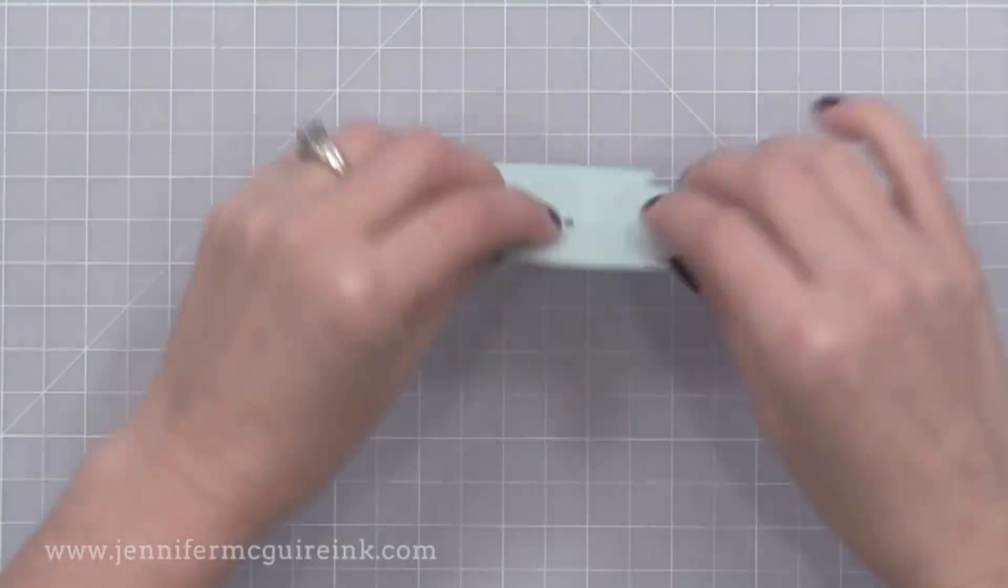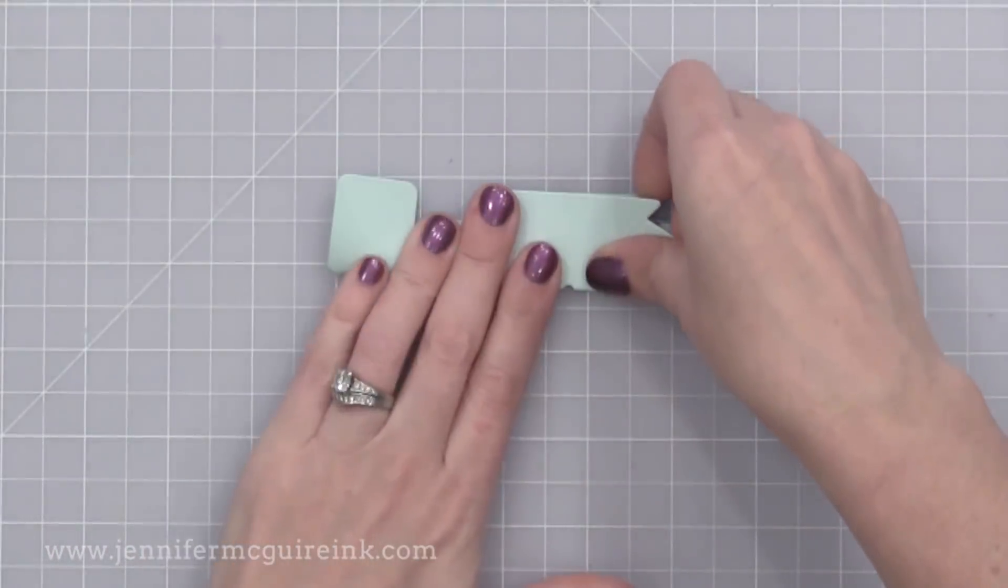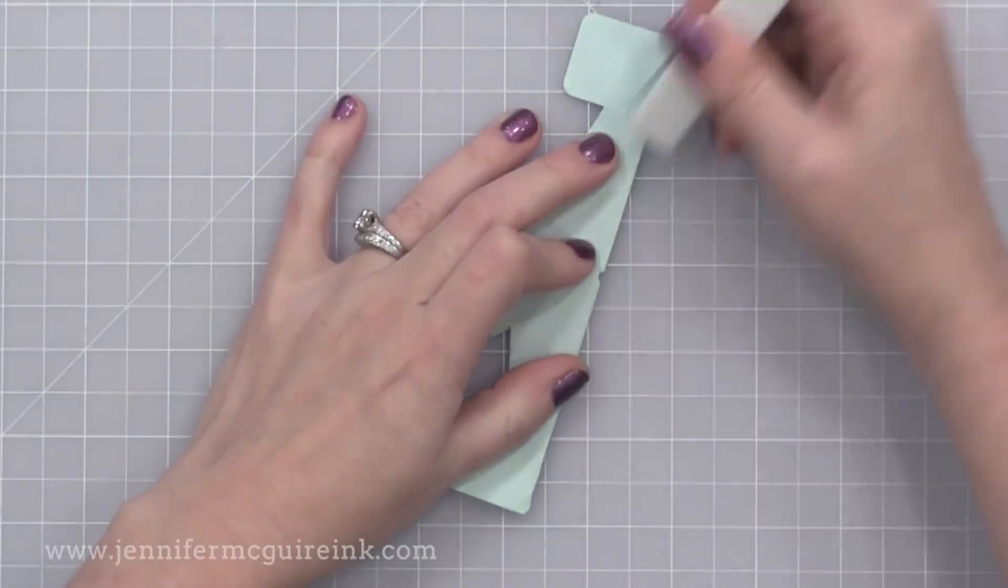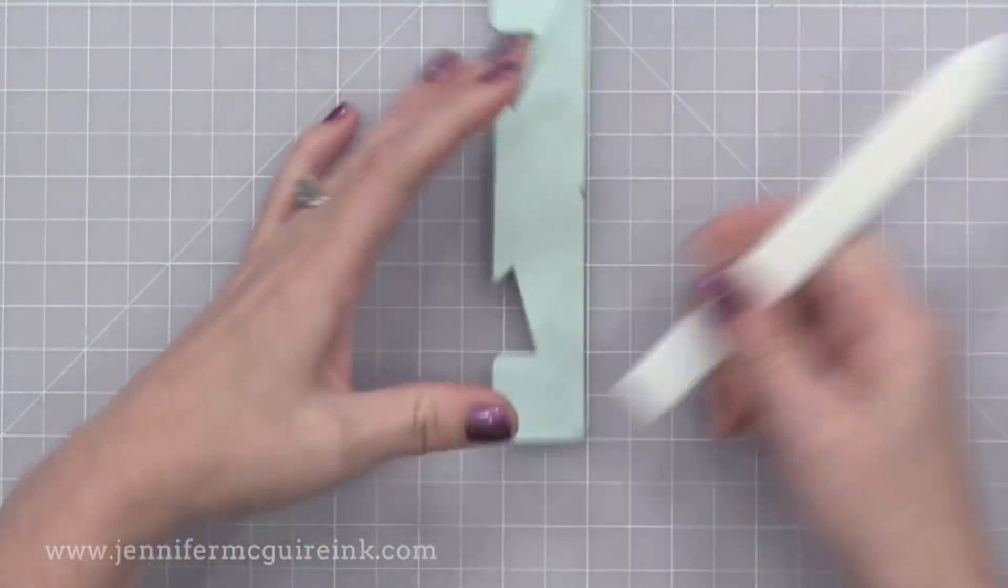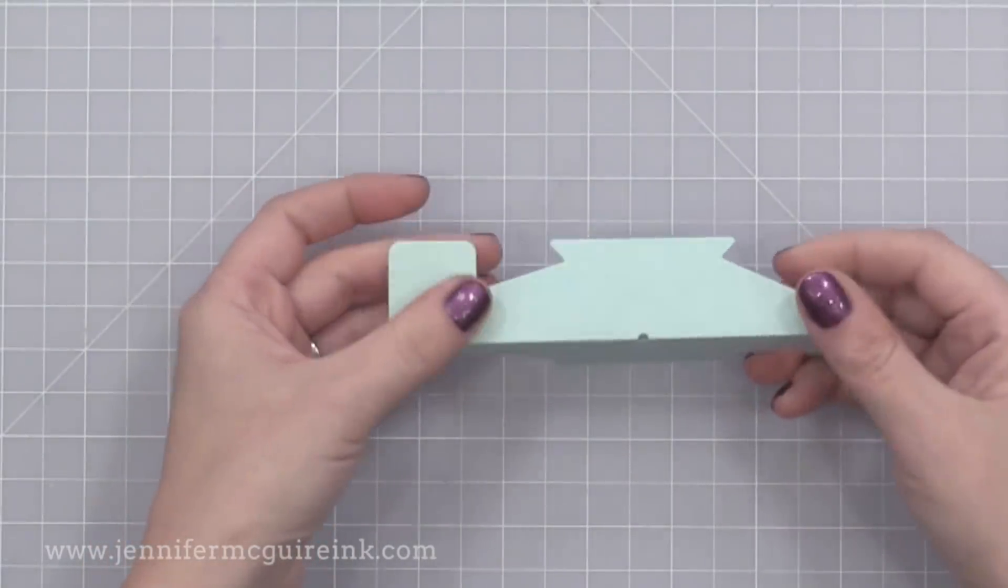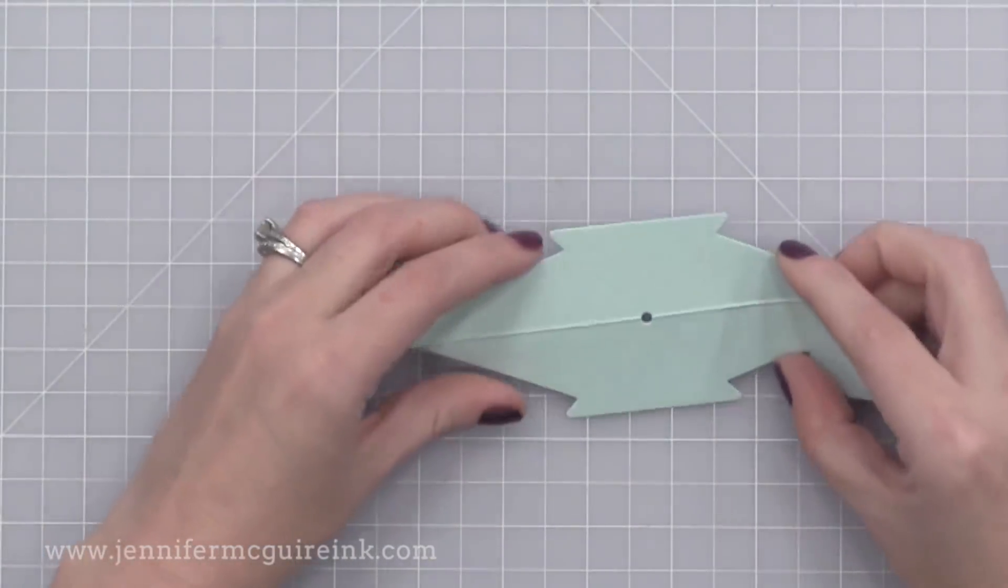First thing you need to do is fold right along that center line. So I'm just folding it over along that score line and reinforcing it with my bone folder. Next I will unfold it and set it on my table so it looks kind of like a mountain. So the point is sticking up, the crease line sticking up.